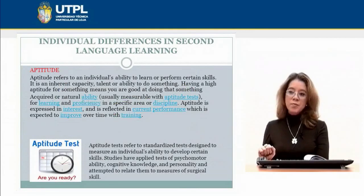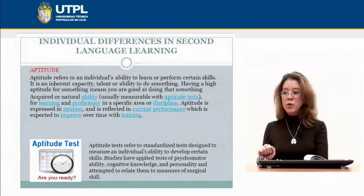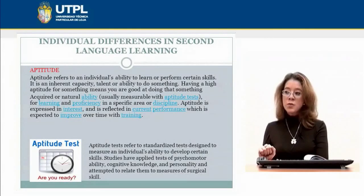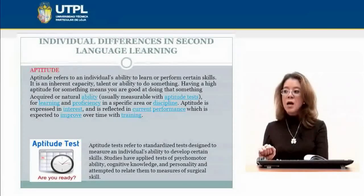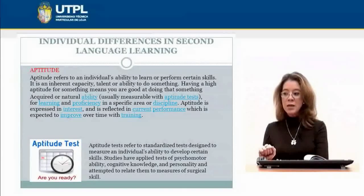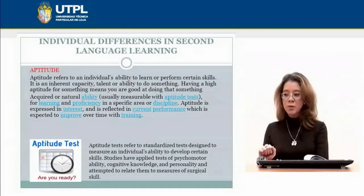What is aptitude? Aptitude refers to an individual's ability to learn or perform certain skills. It is an inherent capacity, talent, or ability to do something. Having a high aptitude for something means you are good at doing it. Aptitude is a natural ability, usually measurable with aptitude tests, for learning and proficiency in a specific area or discipline. Aptitude is expressed in interest and reflected in current performance, which is expected to improve over time with training.